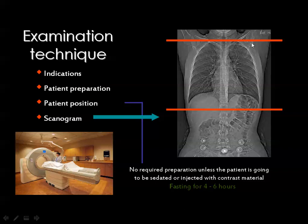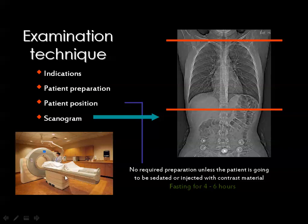We usually scan an adult chest every one centimeter and a child's chest every seven millimeters. After this, the machine asks whether to inject the patient with contrast or not. If there is an indication to inject contrast, you inject the patient and press the button on the keyboard indicating that contrast has been given, so this appears on the image. If there is no indication for contrast, you proceed directly to scanning.